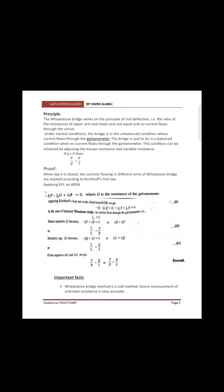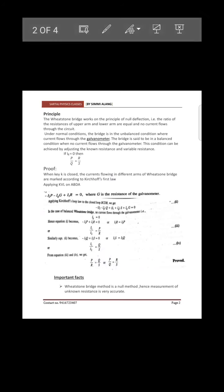The derivation proof shows that if galvanometer shows no deflection, then P/Q = R/S. In this video we are only doing a recap of Current Electricity Part 2, not detailed derivations. For detailed explanation videos of each topic, links will be mentioned in the description box. You can also comment for topics needing a dedicated video.